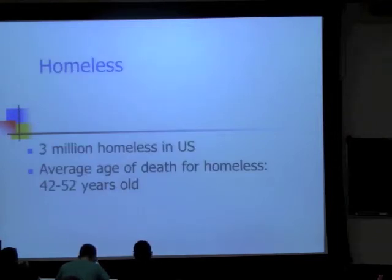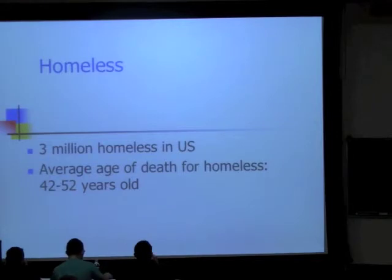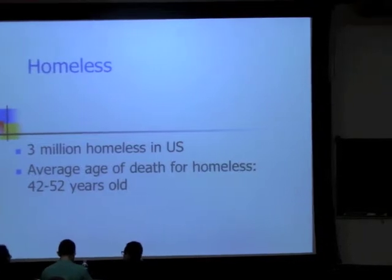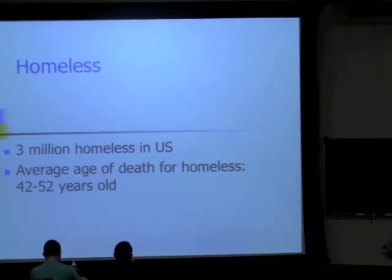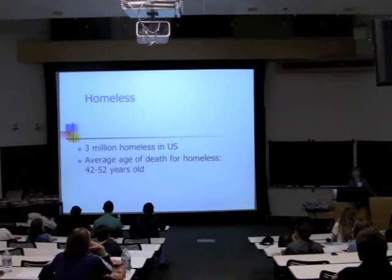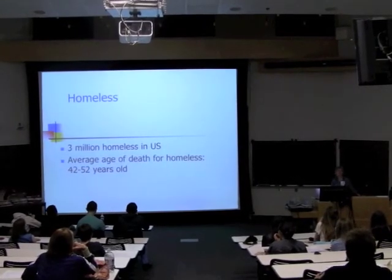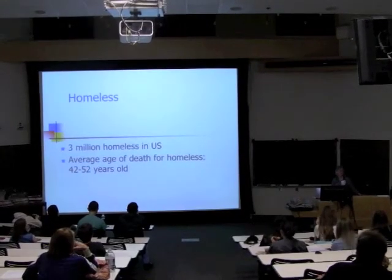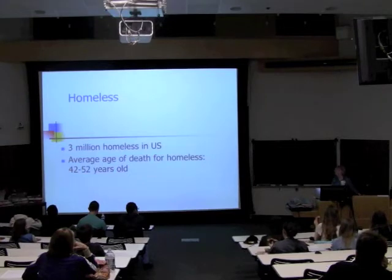Estimates are that there are about 3 million homeless people in the United States. That's bad because it's hard to be without a home, but it's also a significant health problem — the average age of death for someone who is homeless is 42 to 52 years old. It's clearly not just a social issue.